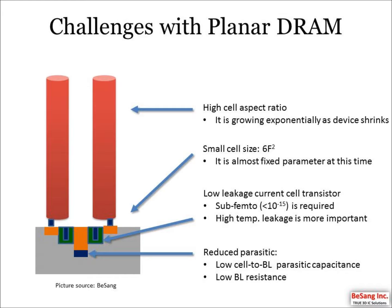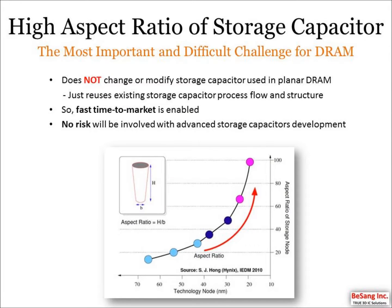Especially, leakage current at high temperature is important. Parasitic capacitance between the storage capacitor and the bit line should be minimized, and bit line series resistance should also be minimized. The most important and difficult challenge for Planar DRAM is the high aspect ratio of the storage capacitor. As shown in the graph, the aspect ratio of the storage capacitor is growing exponentially as the device shrinks.